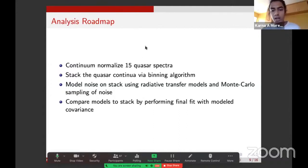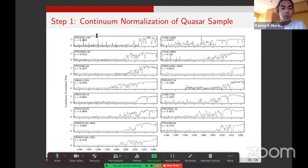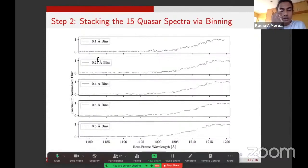Here's step one, continuum normalization. We just divide the spectra by the continuum, pretty standard. Step two is stacking the 15 quasar spectra via binning. We just take an average of all the flux pixels within a particular wavelength bin. For our final analysis, we chose 0.5 Angstrom bin size.